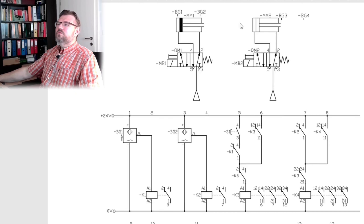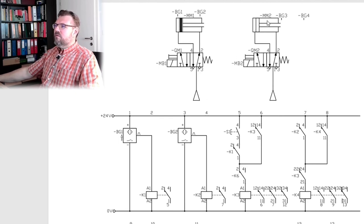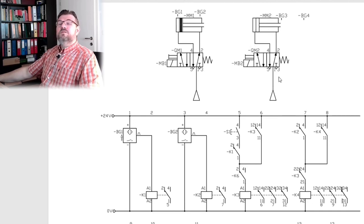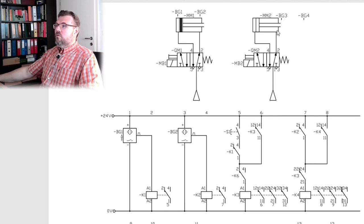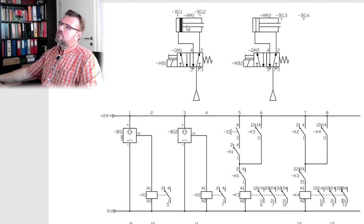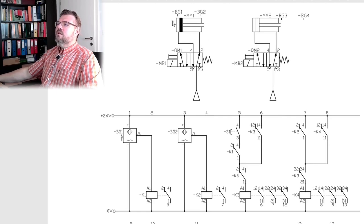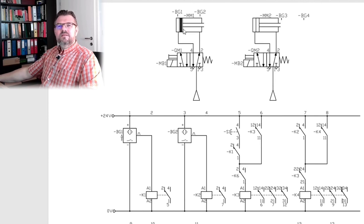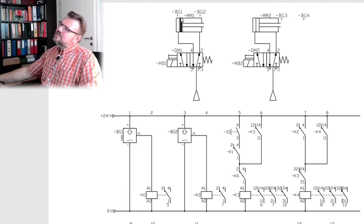The pneumatic part is again rather simple. We have two cylinders this time, and two control valves. We have here the cylinder MM1, we have here the cylinder MM2. And both cylinders do have limit switches. PG3 and PG4 here on MM2, they look like they are positioned somewhere outwards. So there might be some roller lever switches or something like this. And here at MM1,